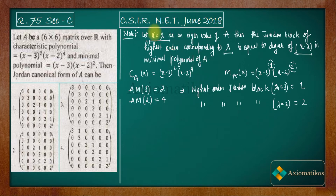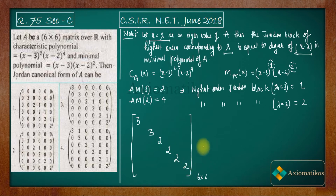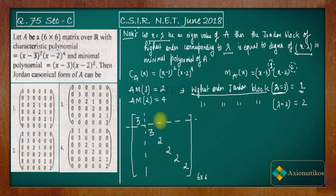Now we have to write the Jordan canonical form. We have a 6×6 matrix, so the Jordan matrix will be 6×6. Eigenvalue 3 is repeated 2 times, so we write 3 twice on the diagonal. Since the highest order Jordan block for eigenvalue 3 is 1, no Jordan block can be larger than size 1. So both blocks for eigenvalue 3 are of size 1.